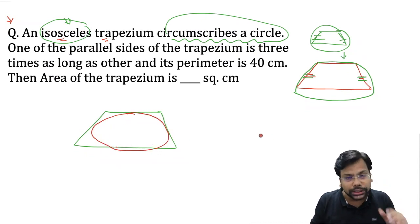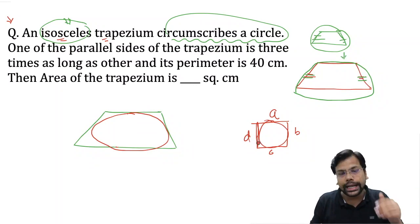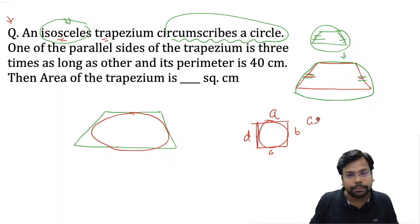You must remember, whenever you have a circle outside a quadrilateral, by the common equal tangent property, if the sides are A, B, C, D, we say A plus C is equal to B plus D.